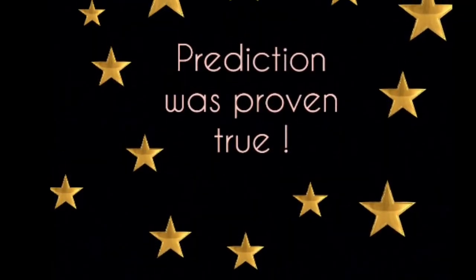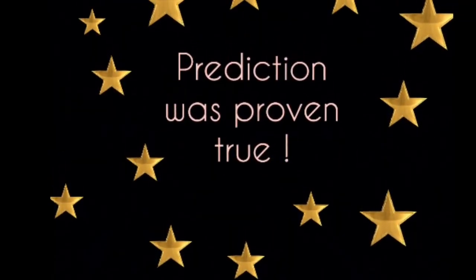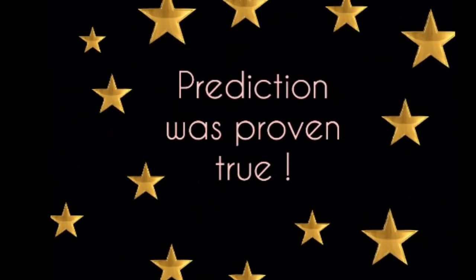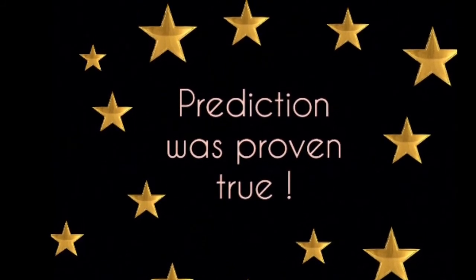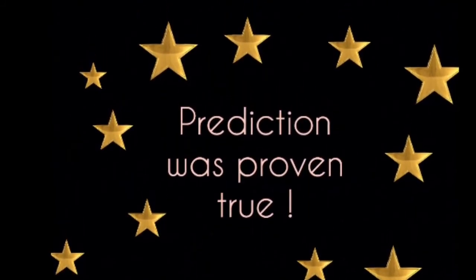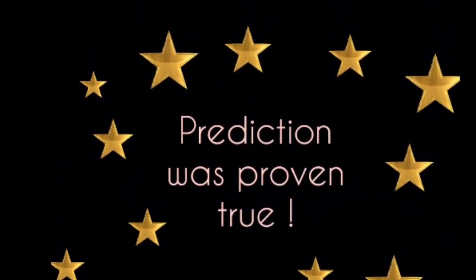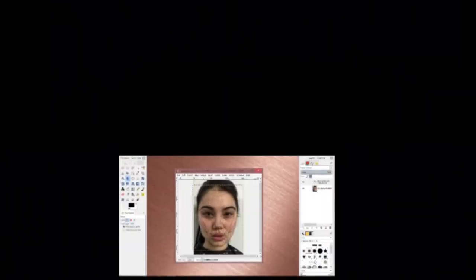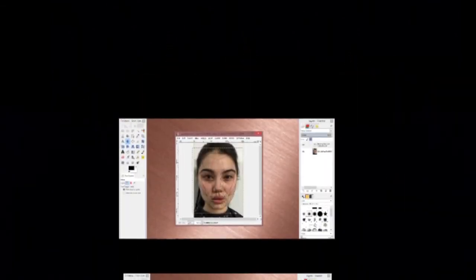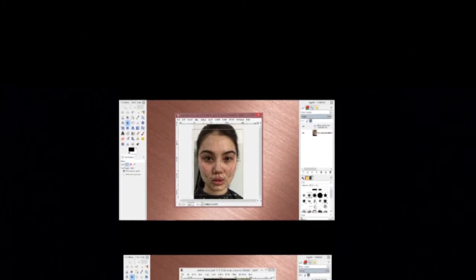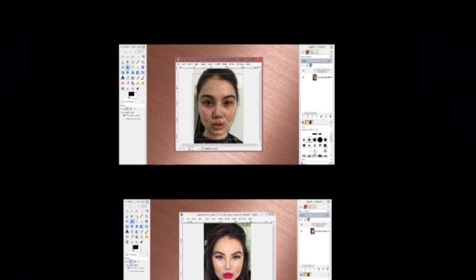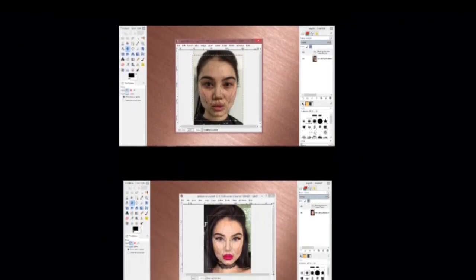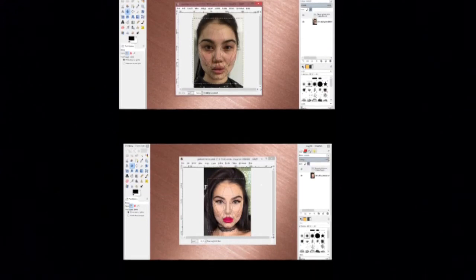The prediction was proven true, because although the makeupless face had a lot of Golden Ratios, there was still an increase in Golden Ratios — or perfect proportions — in the face with makeup. To answer my question, there is a correlation between the number of Golden Ratios in a face with makeup and without makeup, because in this case the number of Golden Ratios increased with makeup.